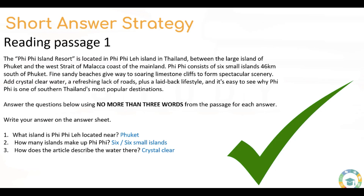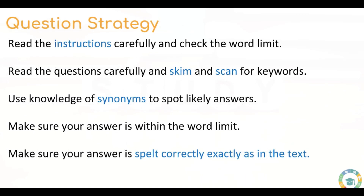Let's take a look at the strategies for answering short answer questions. Read the instructions very carefully and check the word limit — you must stay under this to get any marks at all. Read the questions carefully and skim and scan for key words, both in the questions and in the passage. Remember you can underline key phrases and information. Use your knowledge of synonyms to spot likely answers — for example, if there is something that says 'housing', think of synonyms for that such as 'residential'. Make sure you answer within the word limit and that your answer is spelt correctly, exactly as in the text.